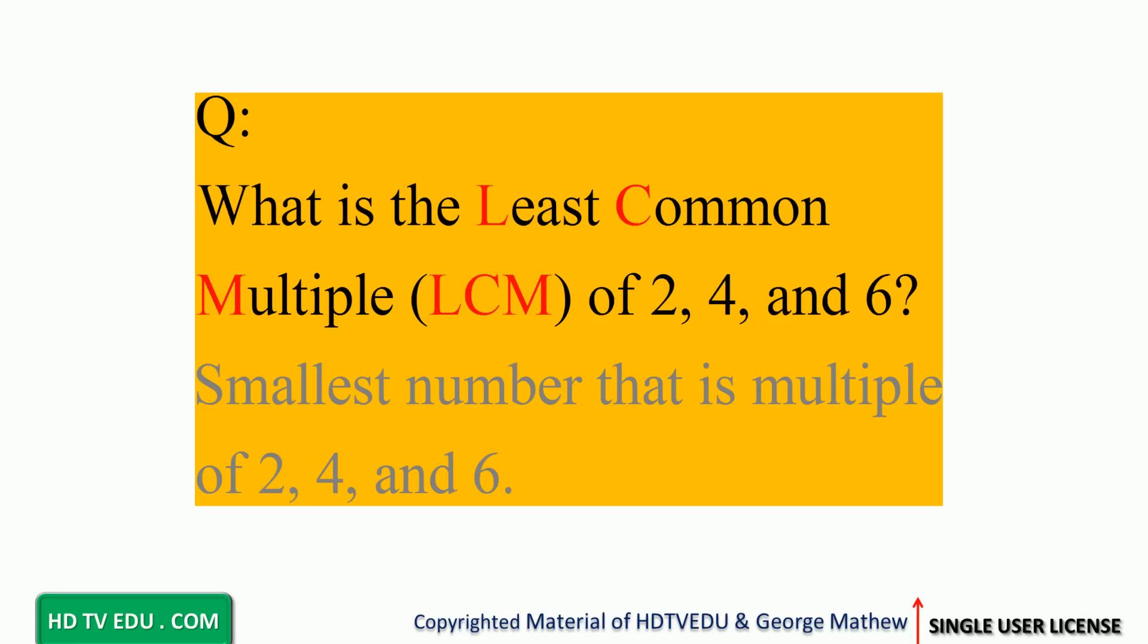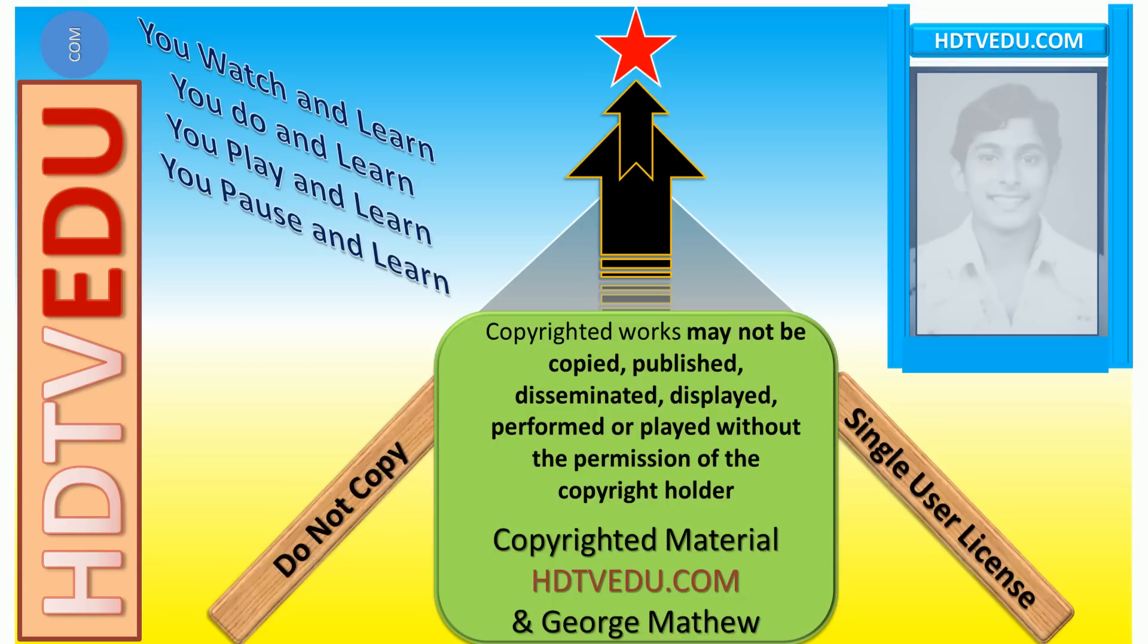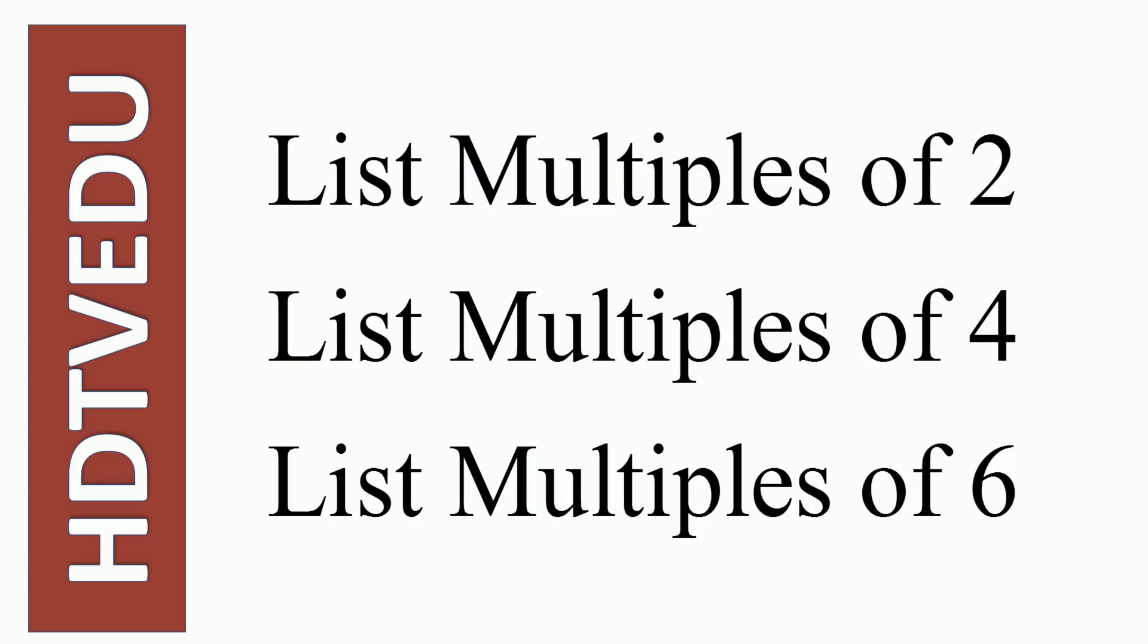What is the least common multiple (LCM) of 2, 4, and 6? What is the smallest number that is a multiple of 2, 4, and 6? Welcome to hdtvedu.com. We'll list multiples of 2, we'll list multiples of 4, and we'll list multiples of 6.